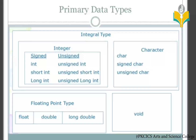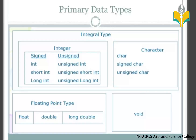We have four primary data types: integer, character, floating, and void. For integer types, we use signed and unsigned. Signed means positive and negative values, while unsigned means purely positive numbers.